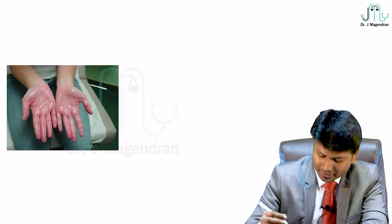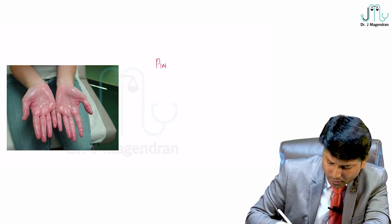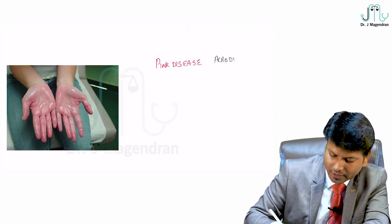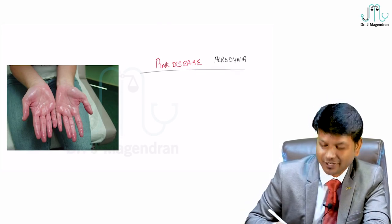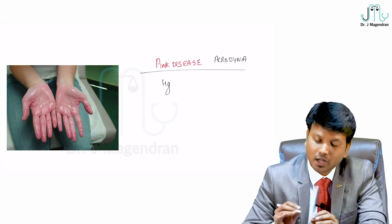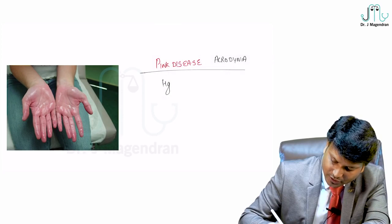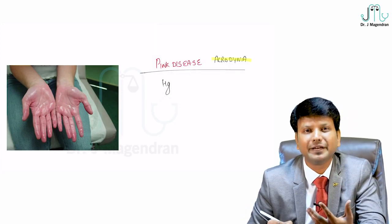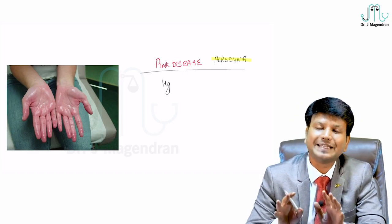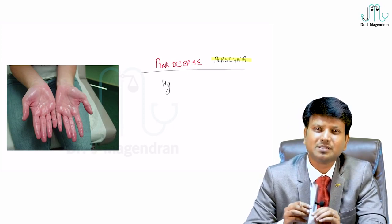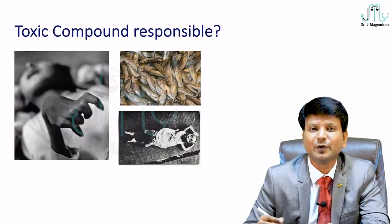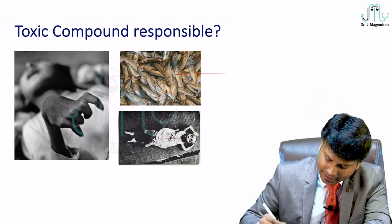This condition shows a pink-colored palm. It is called Pink Disease, also known as acrodynia. The causative agent is mercury — specifically mercurous chloride in chronic mercurial poisoning. In acrodynia, the person develops pain in the peripheries (hands and feet), peeling of skin, and swelling of the peripheries. Acrodynia is seen with mercury poisoning — this is a repeat question asked many times.